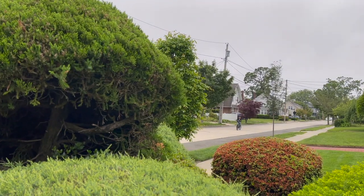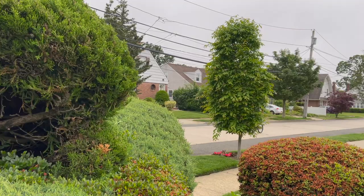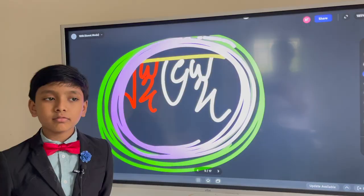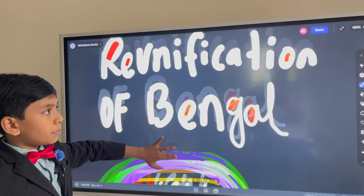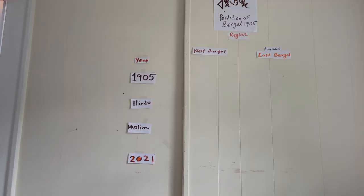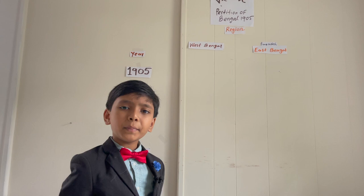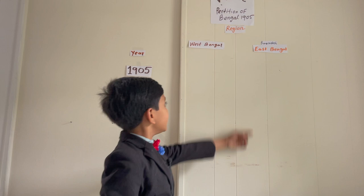Today we will be looking at the reunification of Bengal and some statistics of West Bengal and East Bengal. Before we start, we will be looking at Banga Bhanga, or the partition of Bengal. Our table here is going to be comparing two provinces in the British world: West Bengal and East Bengal, which is nowadays Bangladesh.